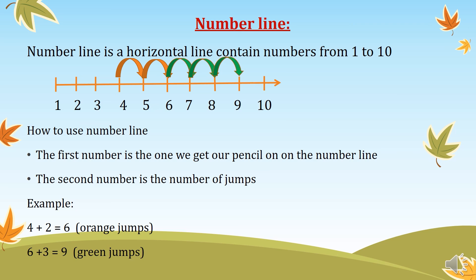Another example: six plus three. Six is the number we place our pencil on the number line. We start from six and jump three jumps — seven is the first jump, eight is the second jump, and nine is the third jump. Then six plus three is equal to nine.